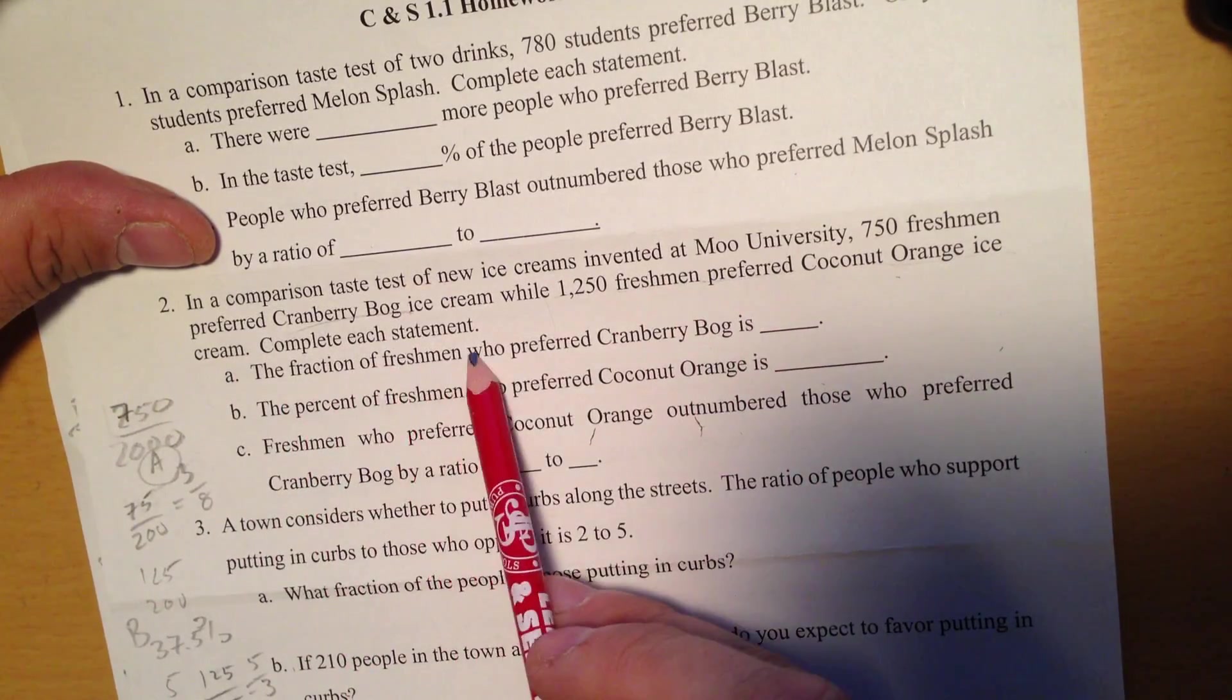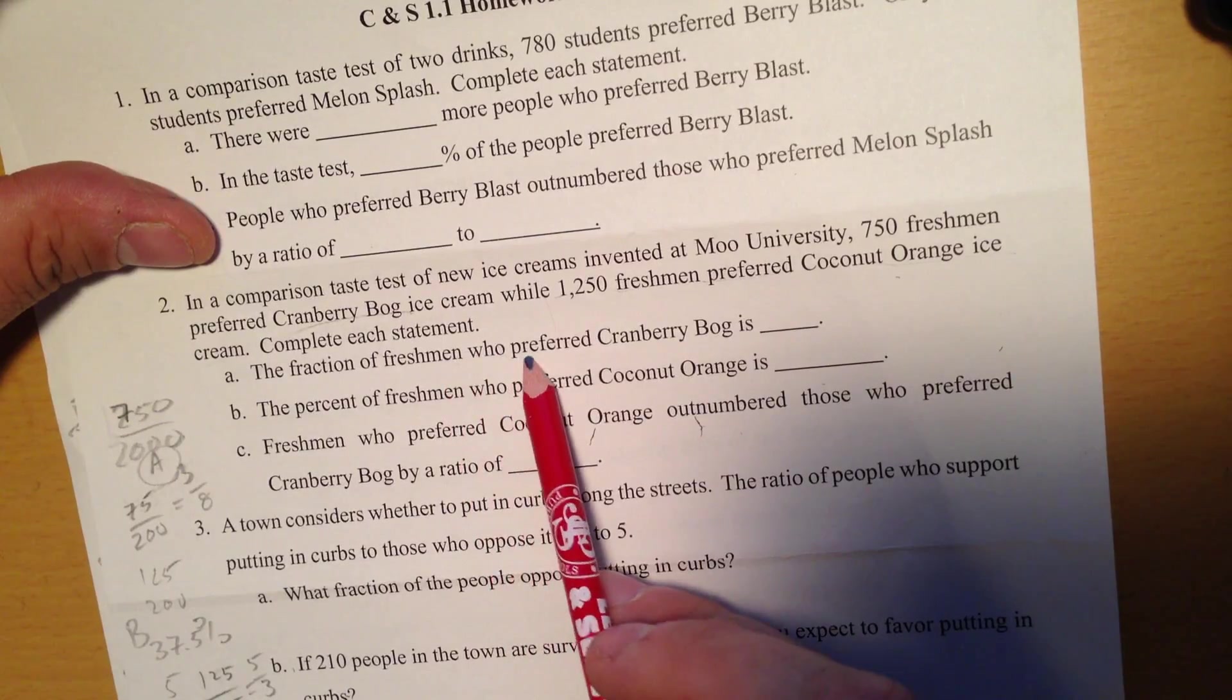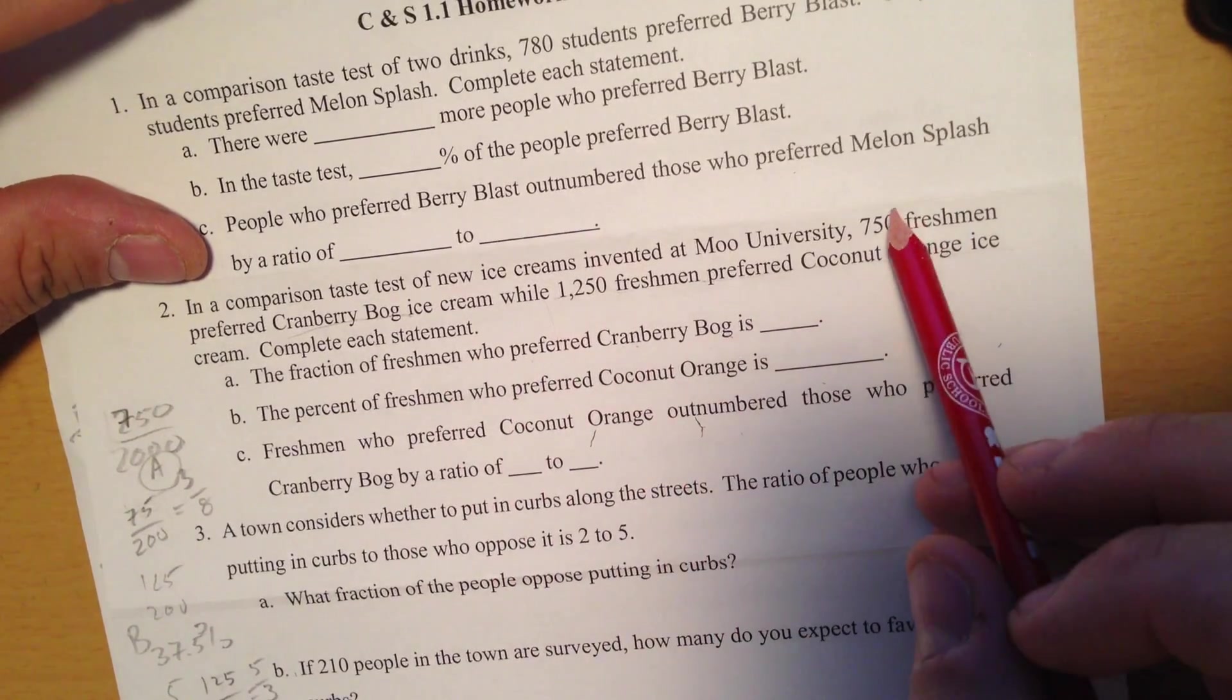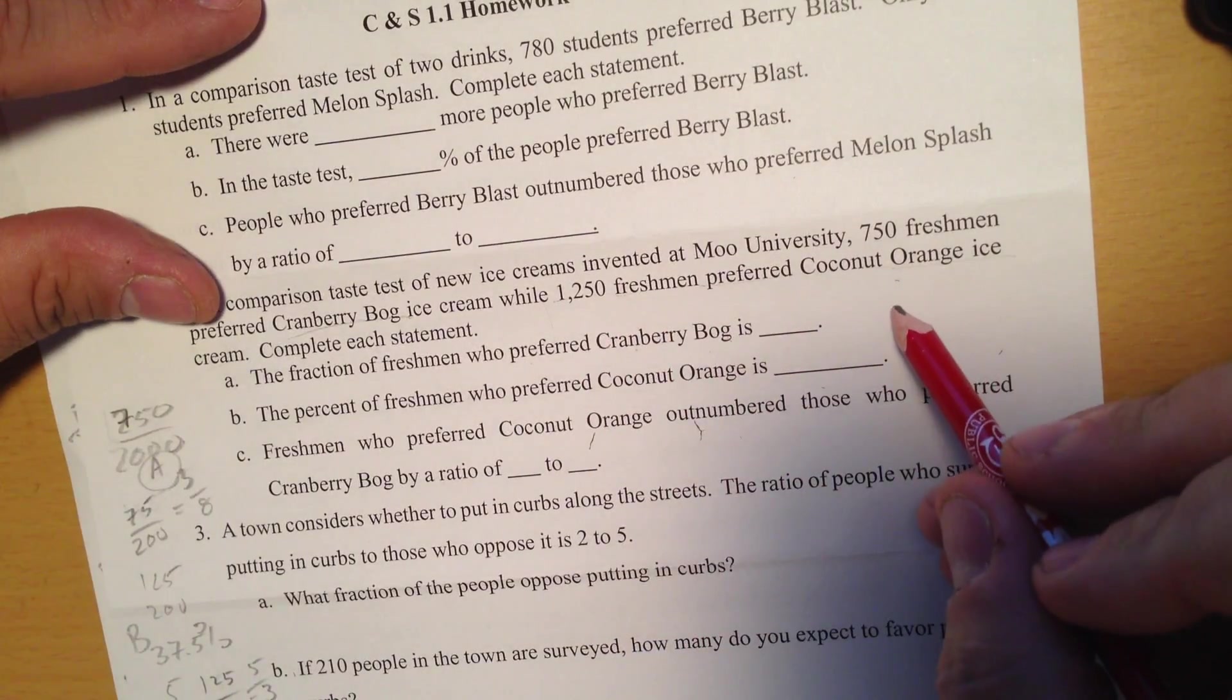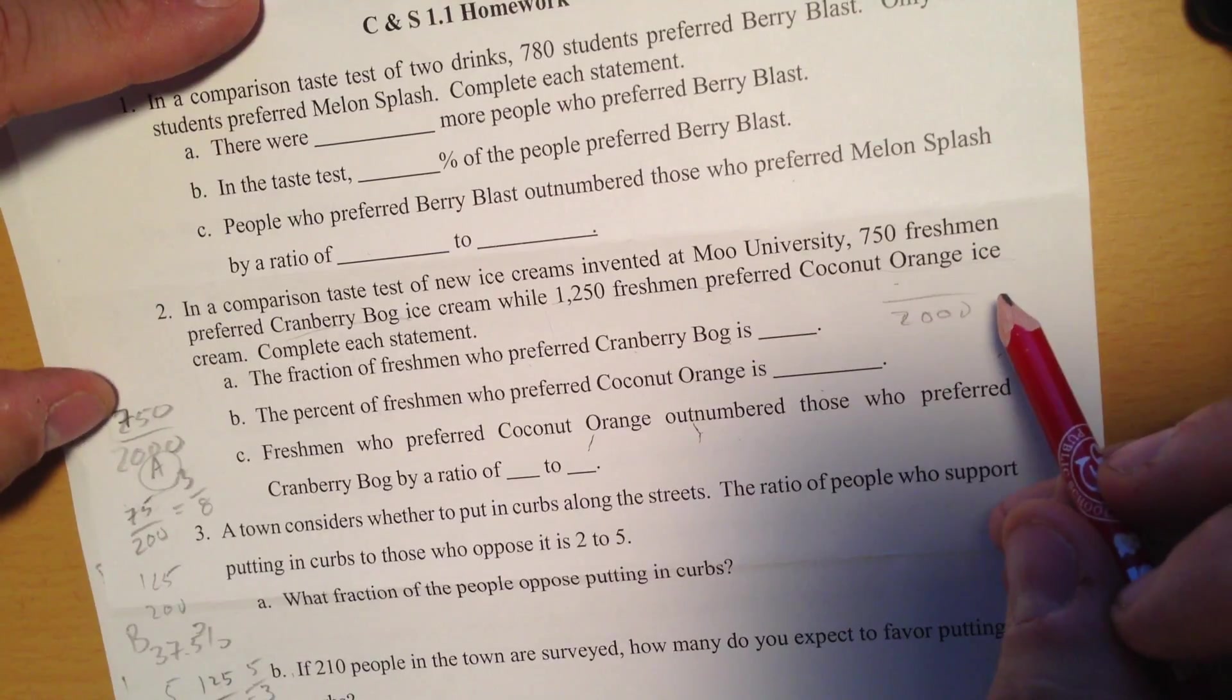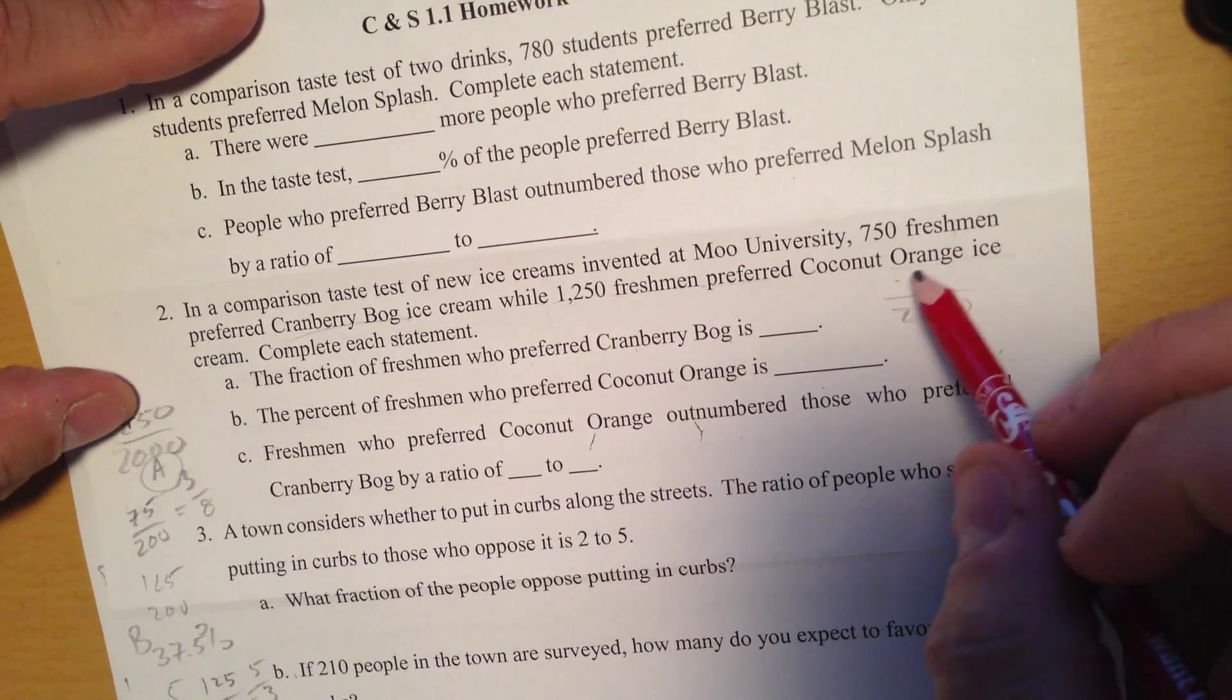Complete each statement. What fraction of freshmen preferred cranberry bog? Well I need to know the total, so 750 plus 1,250 is going to give me 2,000. So we have 2,000 freshmen. Out of the 2,000, those who preferred cranberry bog was 750.